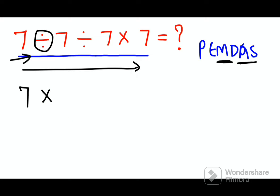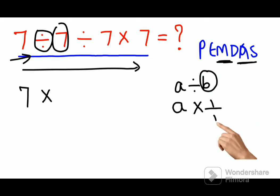Whenever you have something like this, a divided by b, what you do is you keep the first number as it is, change the division sign into multiplication sign, and make the reciprocal of the next number.